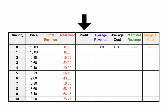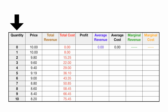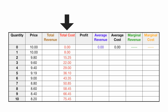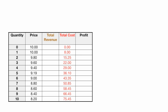First, I'll calculate total revenue, then profit, average revenue, average cost, marginal revenue, and marginal cost. Quantity is given, price is given, and total cost is given. So the very first thing I'm going to calculate is total revenue.